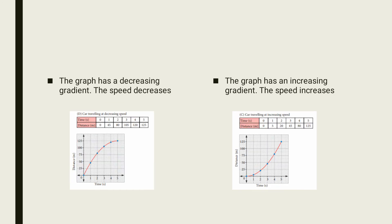In this graph the car travels at decreasing speed, so the graph has a decreasing gradient — gradient means nothing but slope. It has a decreasing slope since its speed decreases. Then in the next graph the gradient, that is the slope, increases because the speed of the car increases.